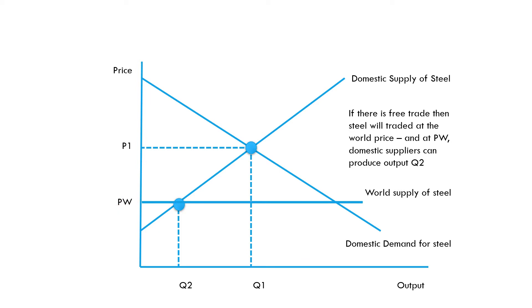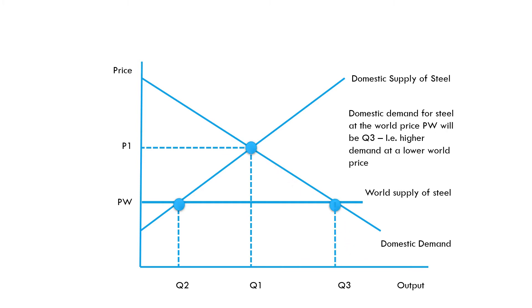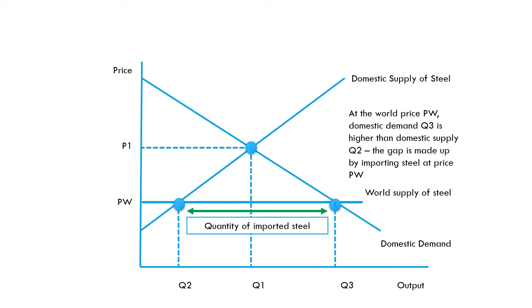How much steel are people going to buy domestically now? Going down the demand curve to Pw, we find that Q3 of steel is consumed by domestic consumers. At this lower price, not surprisingly, people are now buying more steel. Q3 is what people are buying and Q2 is being provided by the domestic companies, so the gap between Q2 and Q3 must be the quantity of imported steel.